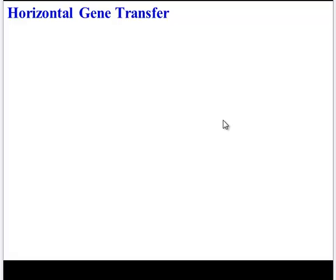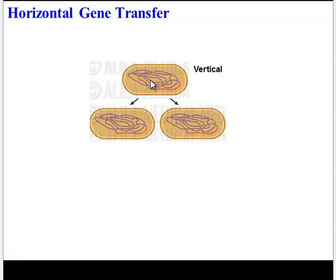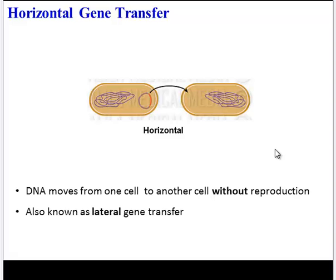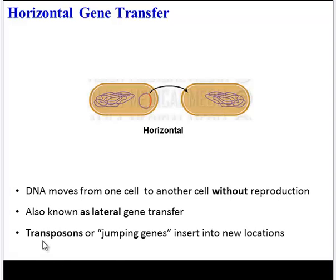Here's where bacteria are unique: bacteria can do something called horizontal gene transfer. This is not like vertical transfer from parent to offspring — it does not involve reproduction. Rather, one adult bacterium can transfer some of its genes to another bacterium, which is something humans definitely can't do. Bacteria can do this partly with the help of transposons — jumping genes that can easily move from one location to another, whether to a new part of the chromosome or an entirely new cell.